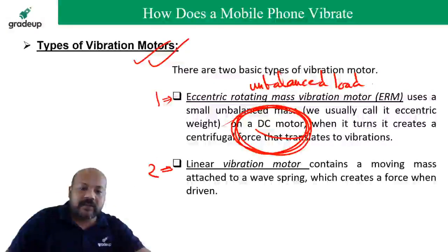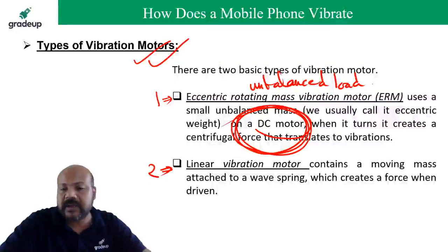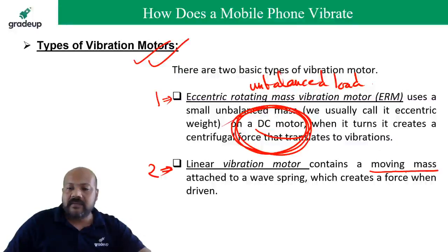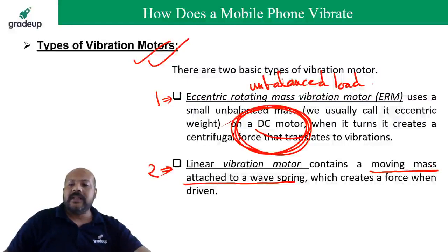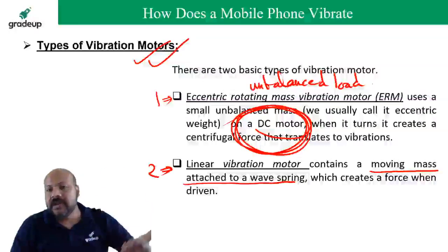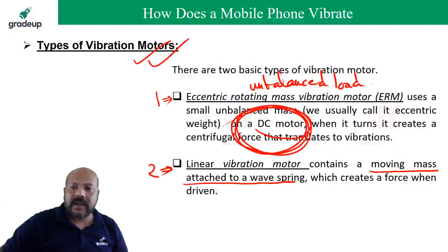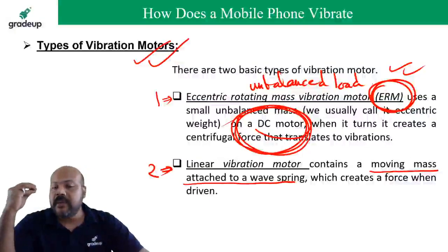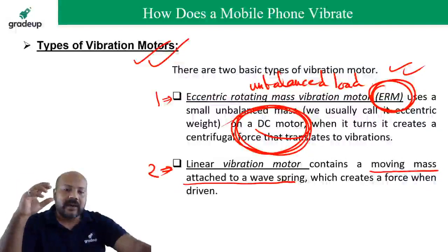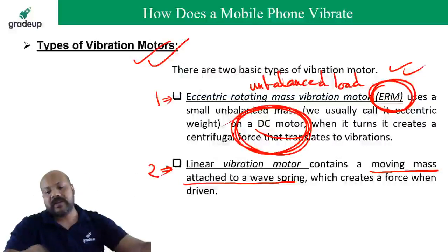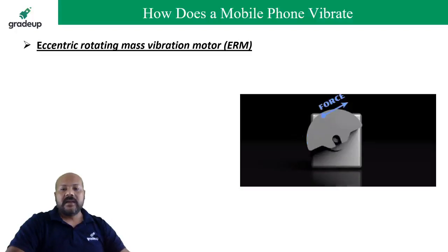The second type of vibration motor used in mobiles is the linear vibration motor. A linear vibration motor is one where the mass is not unbalanced, but the mass moves in such a way that it creates vibrations. Whereas in the case of the Eccentric Rotating Mass vibration motor — ERM motor — the motor has an unbalanced load connected to its shaft. Linear vibration motors do not have an unbalanced load; rather, their motion creates vibrations.